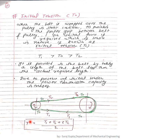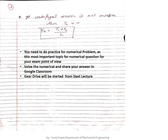The formula for initial tension T0 is: T0 equals (T1 plus T2 plus 2·Tc) divided by 2, when centrifugal tension is considered. If the belt velocity is less than 8 meters per second, centrifugal tension is neglected and taken as zero. In that case, the formula simplifies to T0 equals (T1 plus T2) divided by 2.